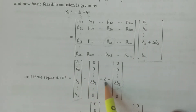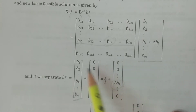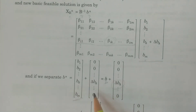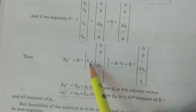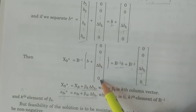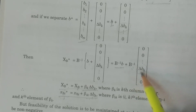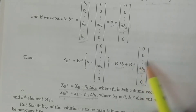If you substitute this into XB star, then XB star equals B⁻¹ multiplied by [B plus (0, 0, ..., delta Bk, ..., 0)]. Therefore, B⁻¹ times B is nothing but XB, so XB star equals XB plus B⁻¹ times [0, 0, ..., delta Bk, ..., 0]. This B⁻¹ is an m×m matrix and the column vector is m×1, so multiplying gives an m×1 matrix.